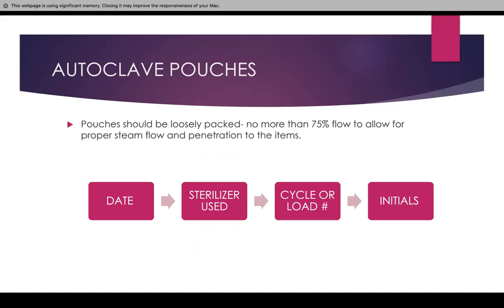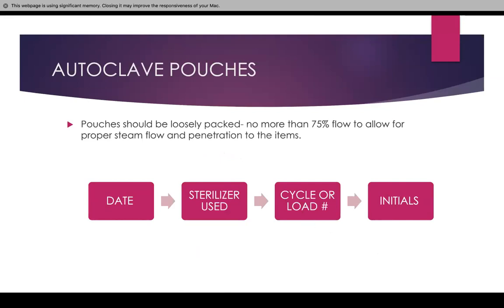For autoclave pouches, it's very simple. You have to have the date of when you enter it, the sterilizer used, the cycle or load number, and your initials. You cannot have one of these missing — you have to have all four pieces of information on it.